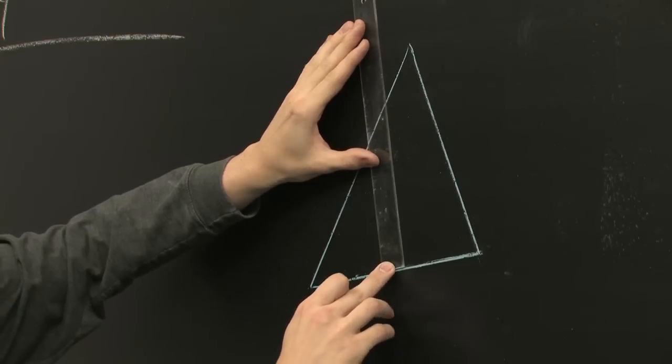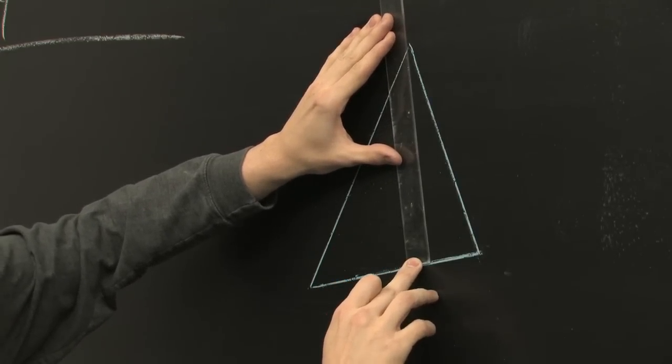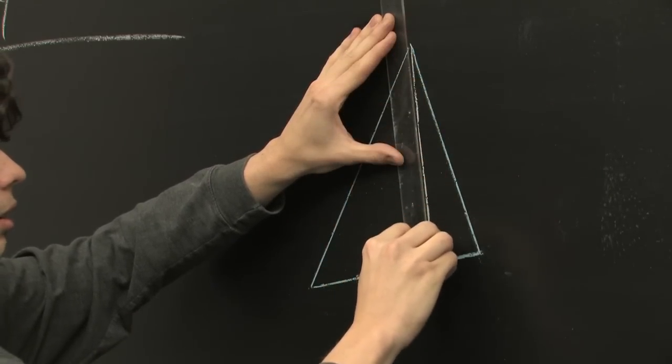So we'll just make a right angle with the side and then slide our straight edge until it hits the opposite vertex. We'll draw that line.